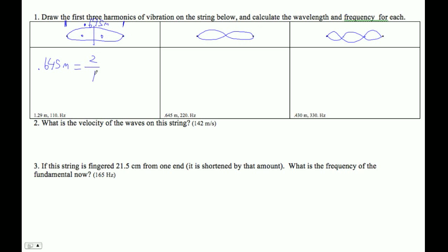So this is two-quarters times a wavelength, and of course the wavelength equals four times 0.645 divided by two, or twice 0.645. That's 1.29.